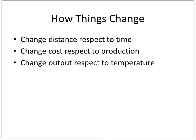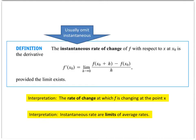I might be interested in the change of distance with respect to time, cost with production, or a particular output. We're just going to stop saying 'instantaneous' — from now on, if we don't mean instantaneous, we'll say average. So nothing looks different here. This is our rate of change, which is taking the limit over whatever our function is.